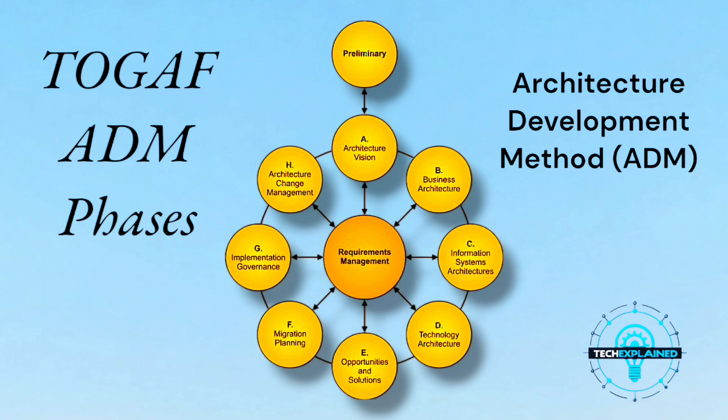Next, we have Implementation Governance, Phase G. This is like checking on the construction crew to make sure the pool isn't being built where the living room should be. It's all about overseeing the implementation to ensure everything aligns with the original vision. In a company, it's about managing the execution of the architecture while sticking to the plan and making adjustments if needed.